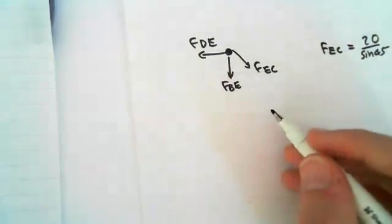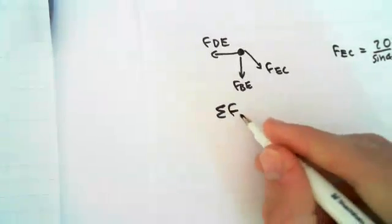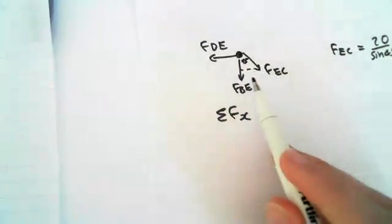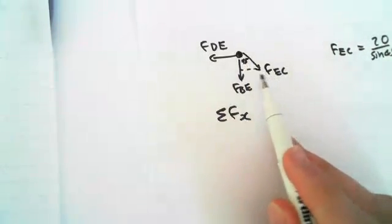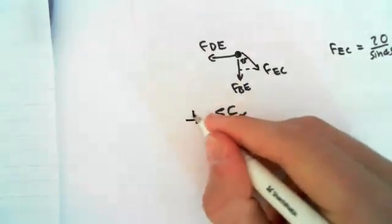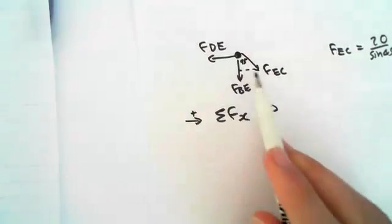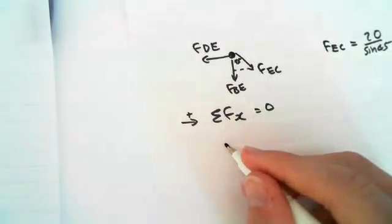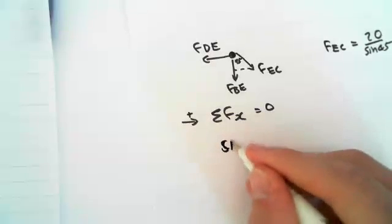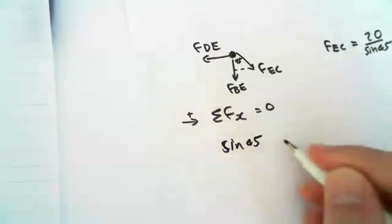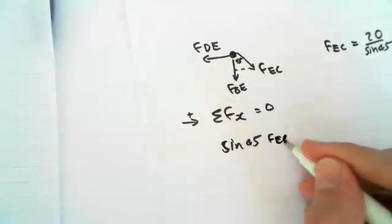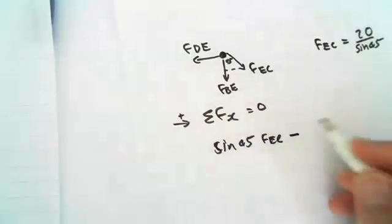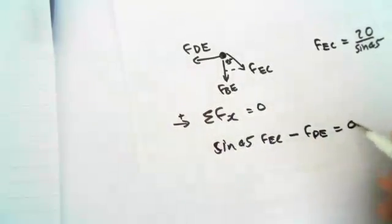So then we do this. We do sum of the forces in the x-direction. So we have to take this x-component of this. So the x-component of this is sine 45. Sine 45 of FEC, minus, since it's gone to the left, FDE, equals zero.